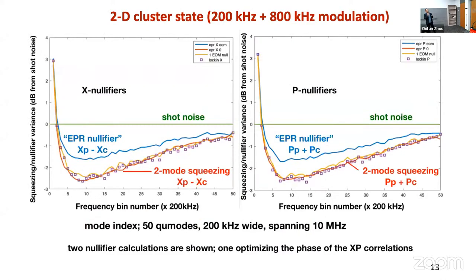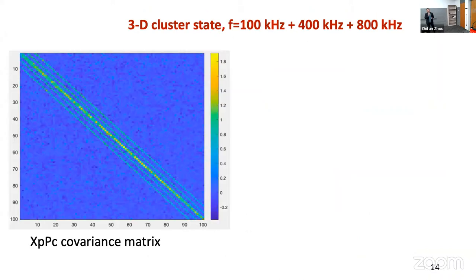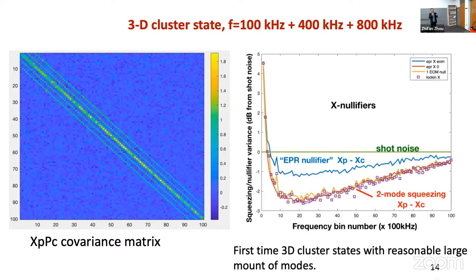Here are the results with two-frequency modulation. We get a similar operation and see the squeezing returning back to the original level, for both amplitude quadrature and phase quadrature. Next is the 3D cluster state. We used three different frequencies of modulation to generate this structure, and the nullifiers are working well. This is the first time people have generated a three-dimensional cluster state with a reasonably large number of modes — here we have about 100 modes, limited by the bin size.